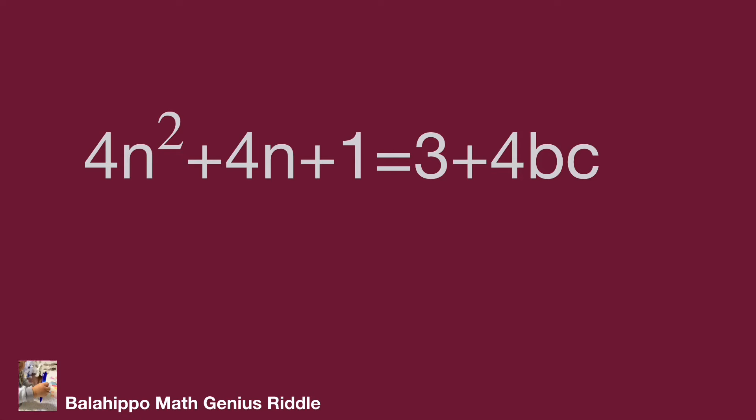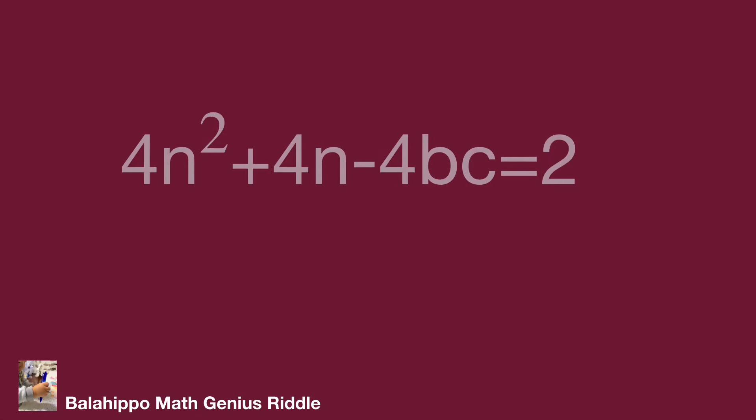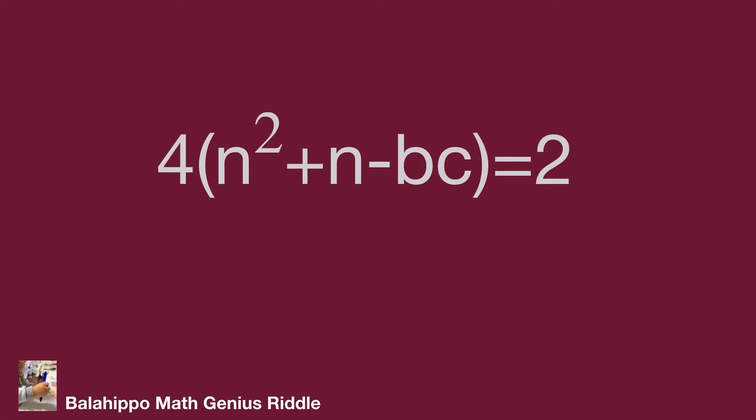Simplify the equation and move all unknown terms to one side: 4n squared plus 4n minus 4bc equals 2. Finally, factorize the left side as 4 times (n squared plus n minus bc) equals 2.